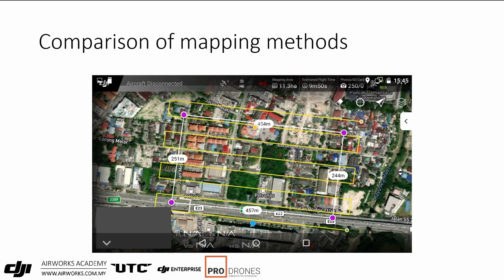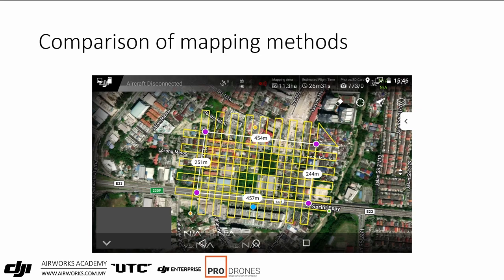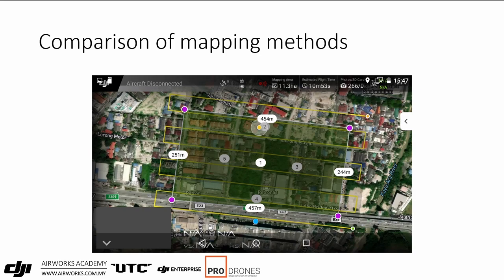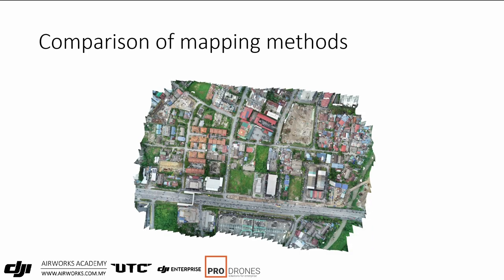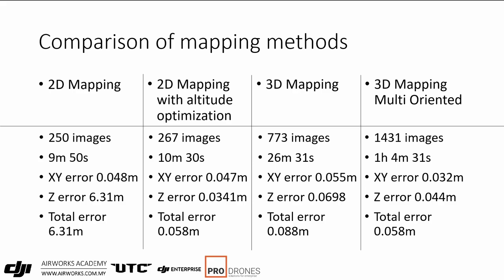For 2D flight mode, the yellow flight line simply goes left to right across the area. 2D mapping took 250 images in 9 minutes 50 seconds. The XY error was within the stated 5cm absolute, but the Z error was significant — 6.3 meters off. With 2D plus altitude optimization — an extra 17 images — it took a little longer, but the total error dropped to about 6 centimeters.